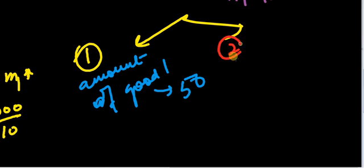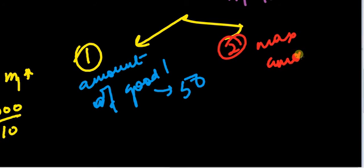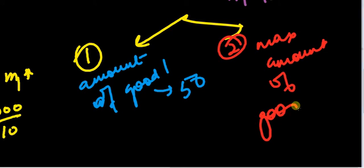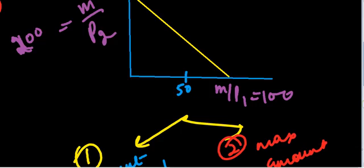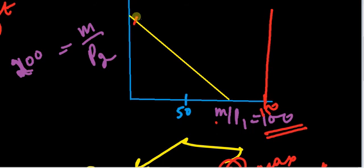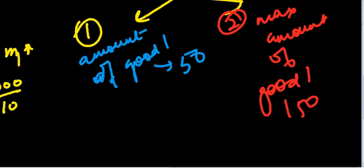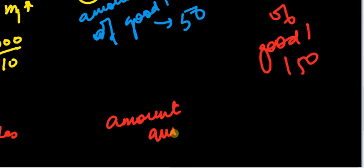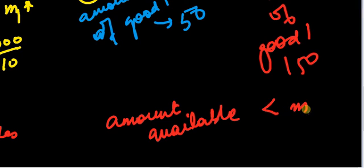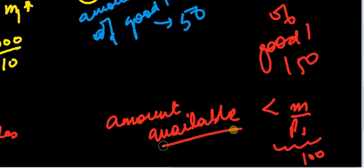Case two: the maximum amount of good 1 available is 150 units. Since 150 is more than what I can afford — I can afford at most 100 units with an income of 1000 — the budget line remains unchanged. So if the amount available is less than M/P1 (which here equals 100), you will have to do rationing.